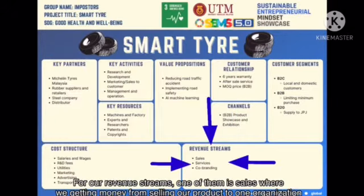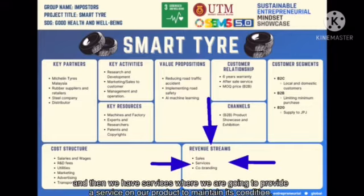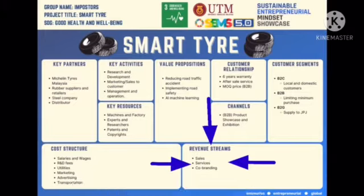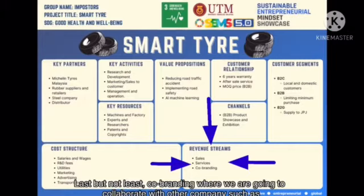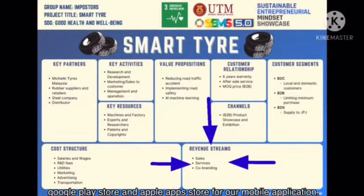For our revenue streams, one of them is sales, where we generate revenue from selling our product to organisations. Then we have services, where we will provide maintenance services for our product to maintain its condition. Last but not least, co-branding, where we will collaborate with other companies such as the Play Store and Apple App Store for our mobile application.